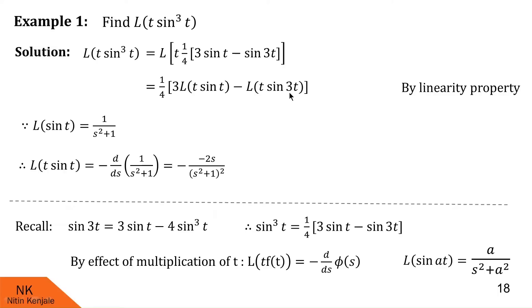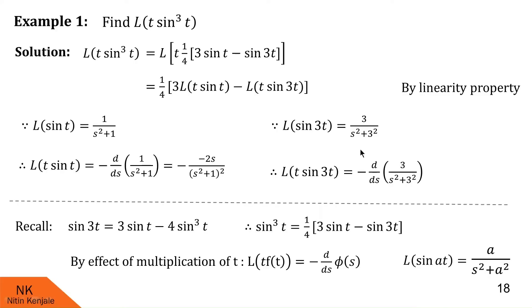Similarly, for Laplace of t into sine 3t: first, Laplace of sine 3t is 3 upon s square plus 9. Then by effect of multiplication by t, Laplace of t into sine 3t is minus derivative of 3 upon s square plus 9, giving minus 3 upon (s square plus 9) squared into 2s. The two minus signs become plus, so we have 6s upon (s square plus 9) squared.